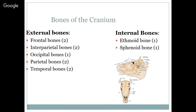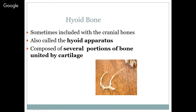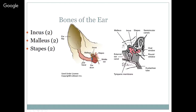Internal bones within the nasal cavity or skull include the ethmoid bone and the sphenoid bone — those are the ones to know. Here's the hyoid bone — see how small it is. It's sometimes included with the cranial bones, it does support the larynx, and it's called a hyoid apparatus; it's actually several portions of bone united by cartilage. Bones of the ear: the incus, the malleus, and the stapes. The stapes is shaped like a stirrup. The malleus is like a mallet on the eardrum. The incus is in between the stapes and the malleus.